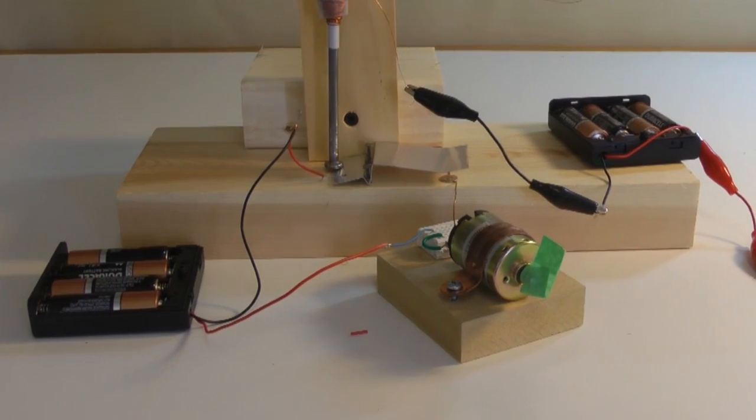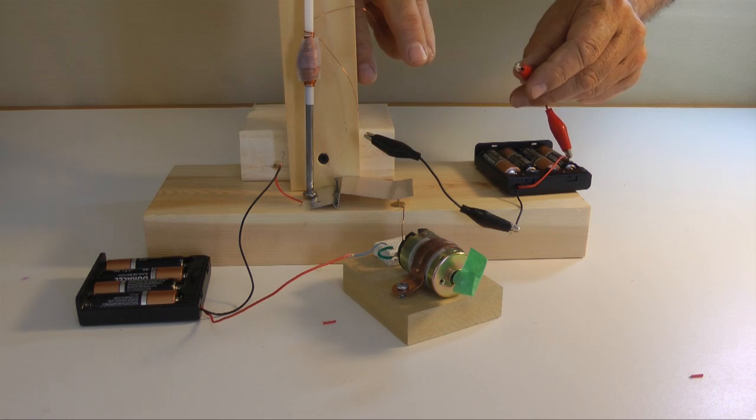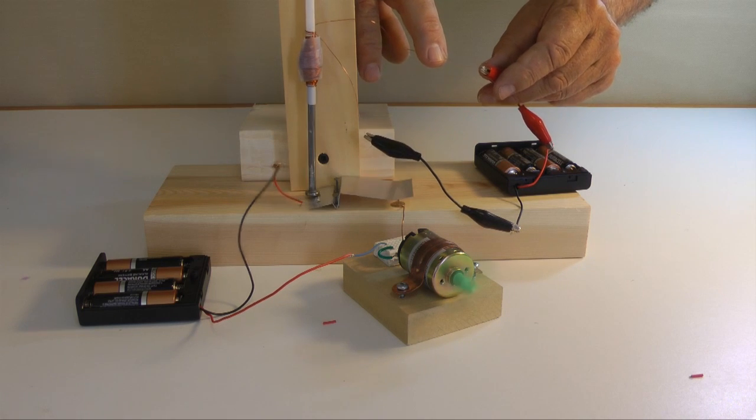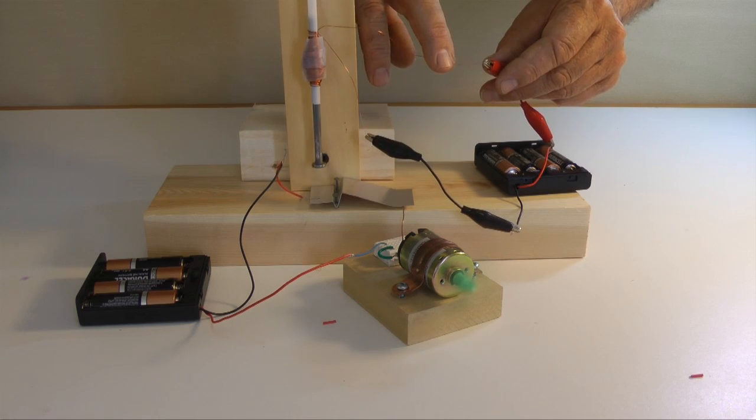I can demonstrate a model relay using this basic solenoid. In this example, this simple relay is controlling an electric motor. The motion of the nail controls the switch, connecting and disconnecting the battery powering the motor.